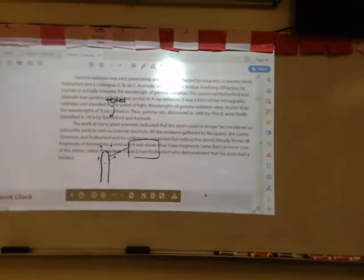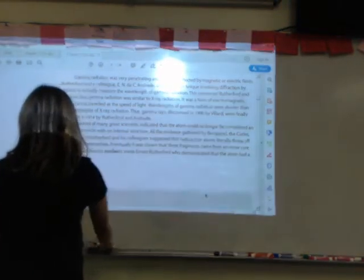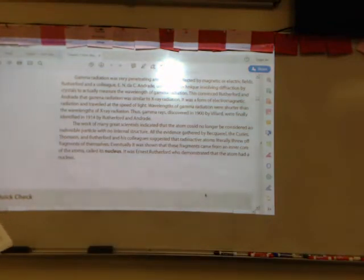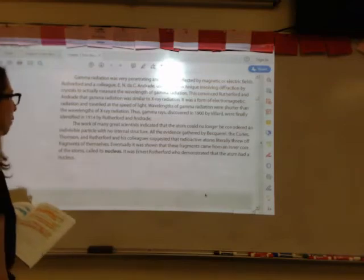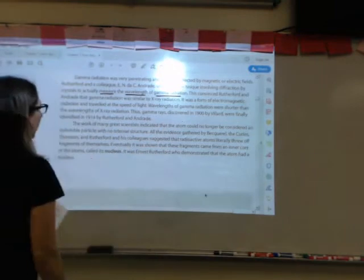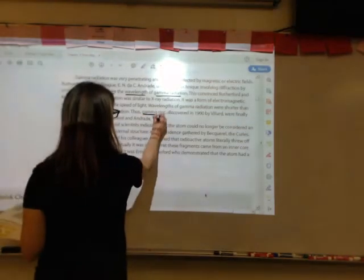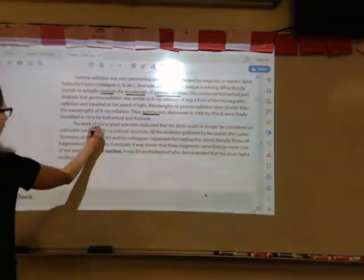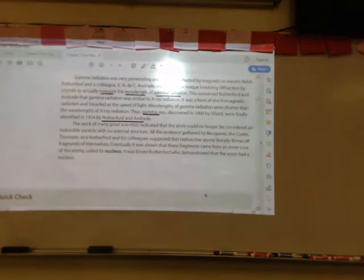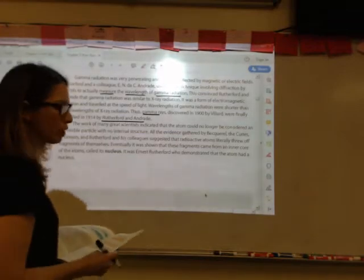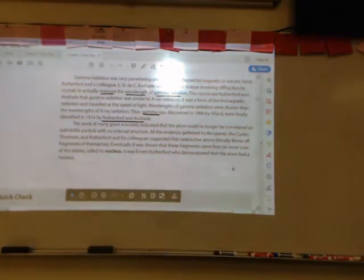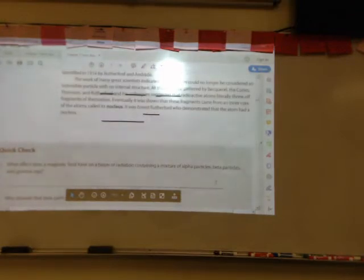Let's go on to the next page and talk about gamma radiation. Gamma radiation is very penetrating, and it's not deflected by a magnetic or an electric field. Rutherford and Andrade used a new technique involving diffraction by crystals to measure the wavelength of gamma radiation. This convinced Rutherford and Andrade that gamma radiation was like x-rays. It was just a form of electromagnetic radiation, and it traveled at the speed of light. The wavelengths of gamma radiation were shorter than the wavelengths of x-ray radiation. So gamma rays discovered in 1900 by Villard were finally identified in 1914 by Rutherford and Andrade. All of the evidence that was gathered by Bacquerel, the Curies, Thompson, Rutherford, that all suggested that radioactive atoms actually threw out pieces of themselves, and they came from the nucleus.